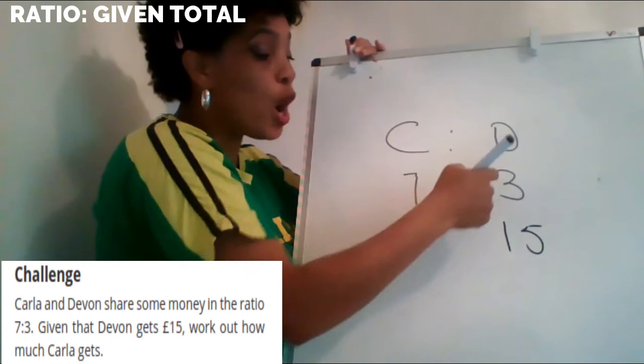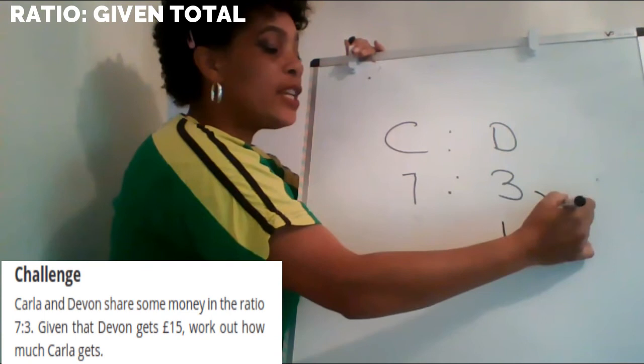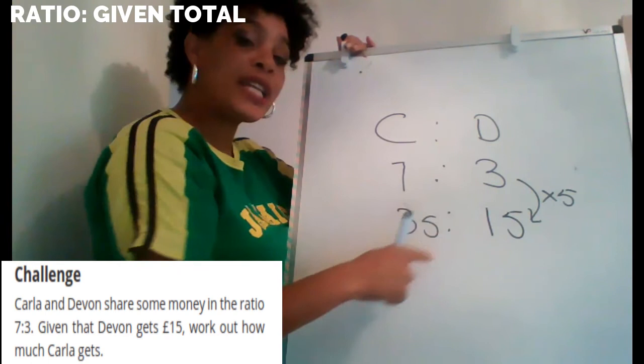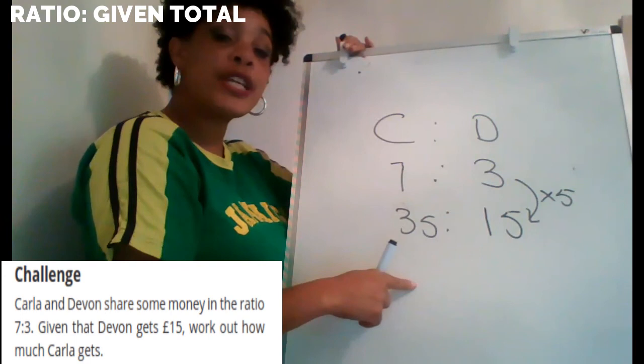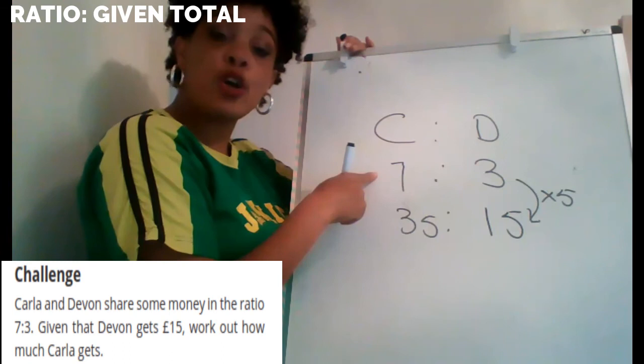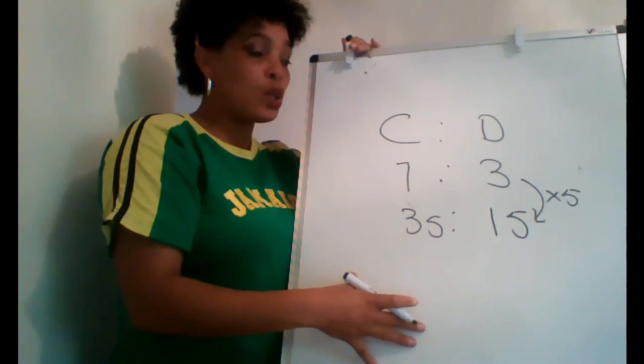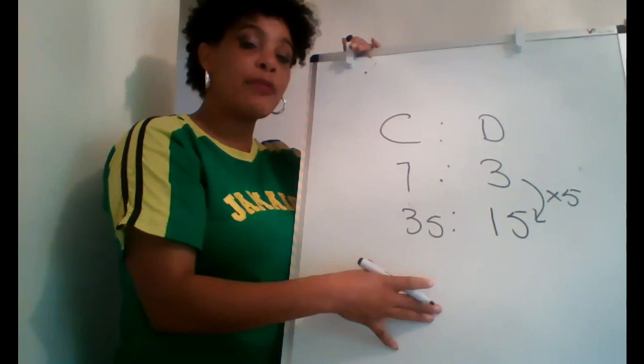What do I do from three to get to 15? Times it by five. So if I times that by five, I have to times Carla's seven by five as well, which gives 35. Devon gets 15, and five represents one part; Carla gets seven parts, so seven times five is 35. Carla got 35 pounds. What I wanted you to get from this lesson was presenting your work in a table form — if you do that, you'll be better able to see what's going on.